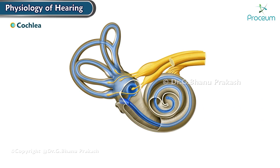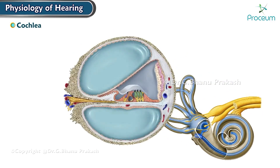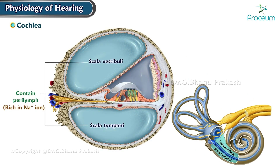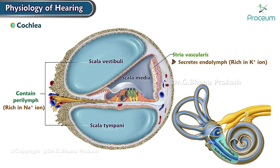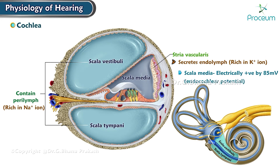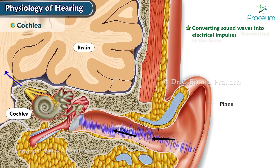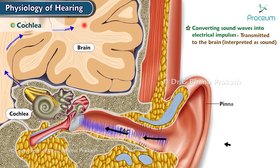The cochlea is 35 mm long and makes two and three quarter turns. The upper scala vestibuli and the lower scala tympani contain perilymph, which is rich in sodium ions. The scala media is the middle cochlear chamber, which has stria vascularis that secretes endolymph, which is rich in potassium ions. The scala media is electrically positive by 85 millivolts relative to the scala vestibuli and scala tympani. The cochlea is responsible for converting sound waves into electrical impulses that are transmitted to the brain, where they are interpreted as sound.